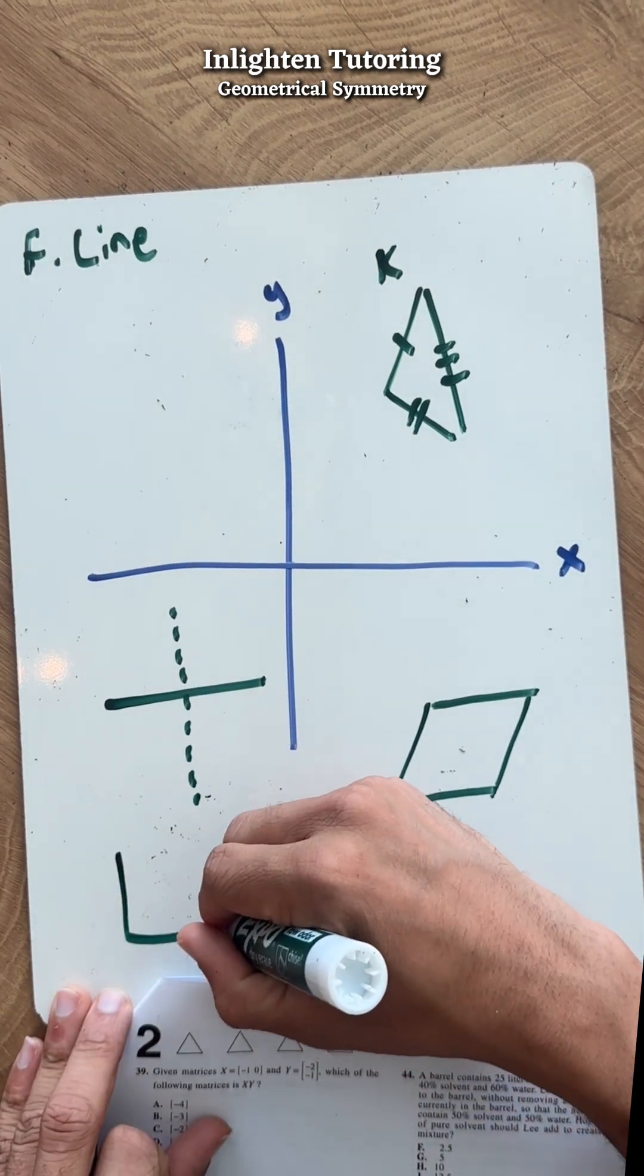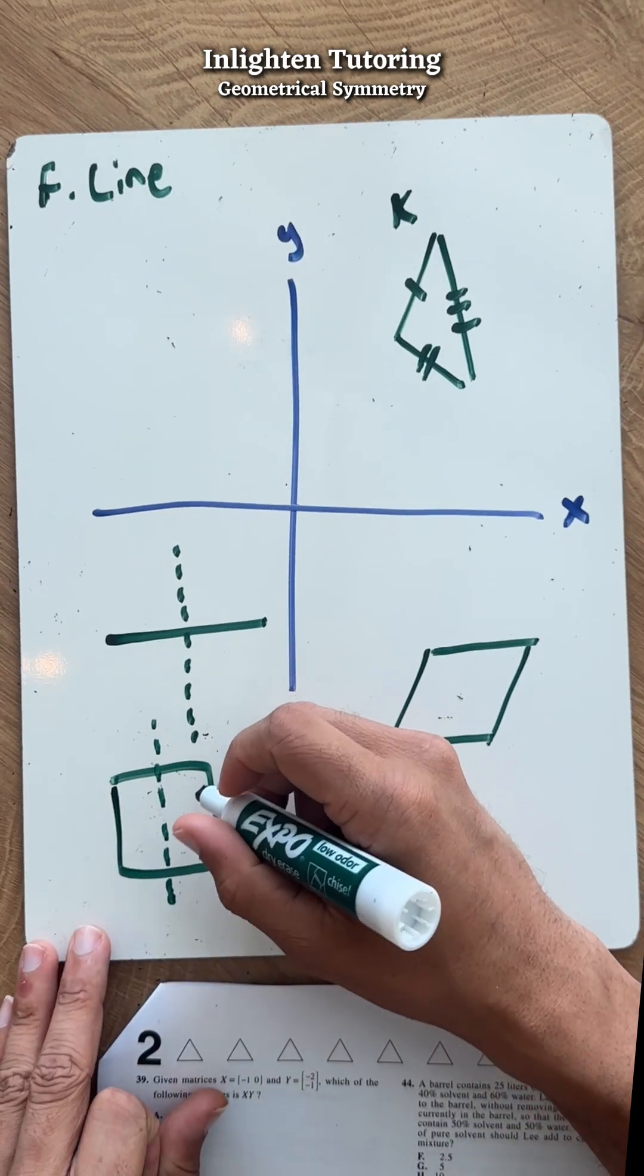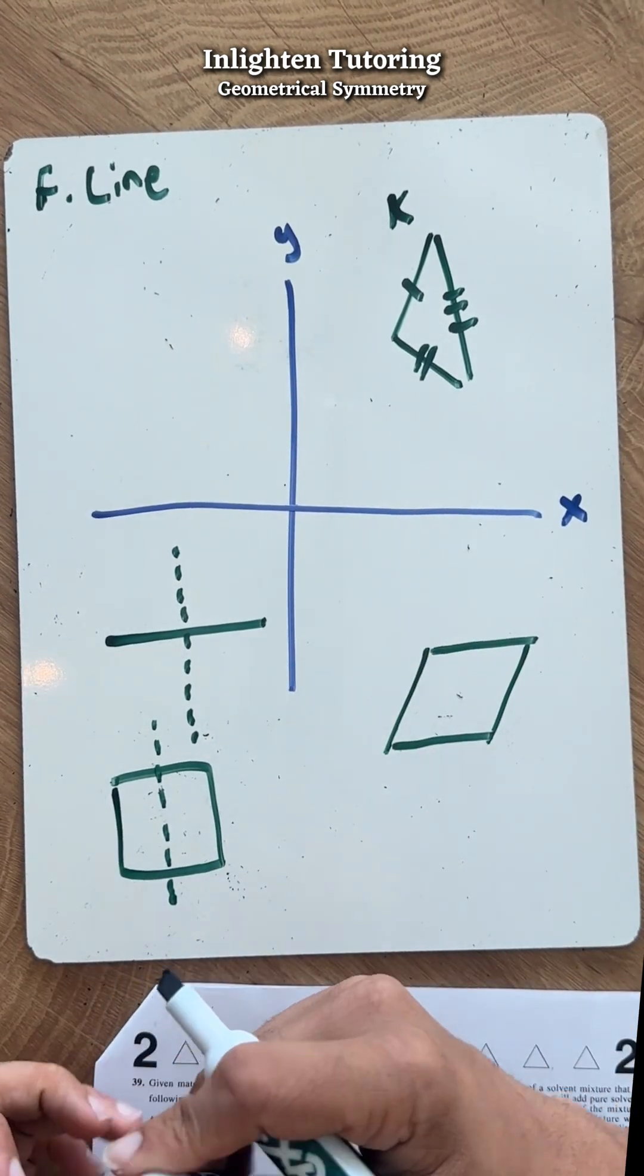A square: if I cut it in half and fold it over, both sides are going to be symmetrical. So F and G both have lines of symmetry, so they're not our answers.